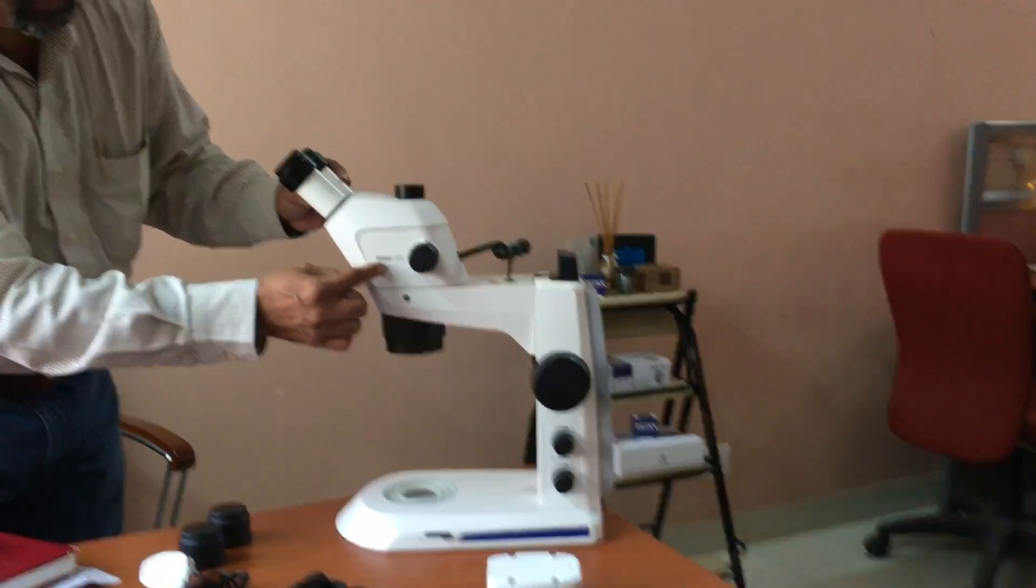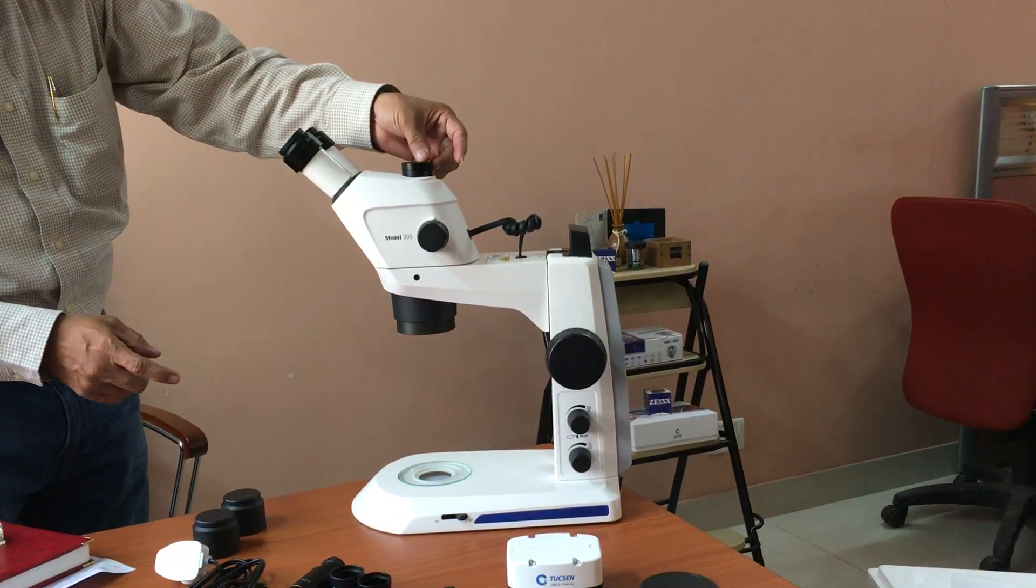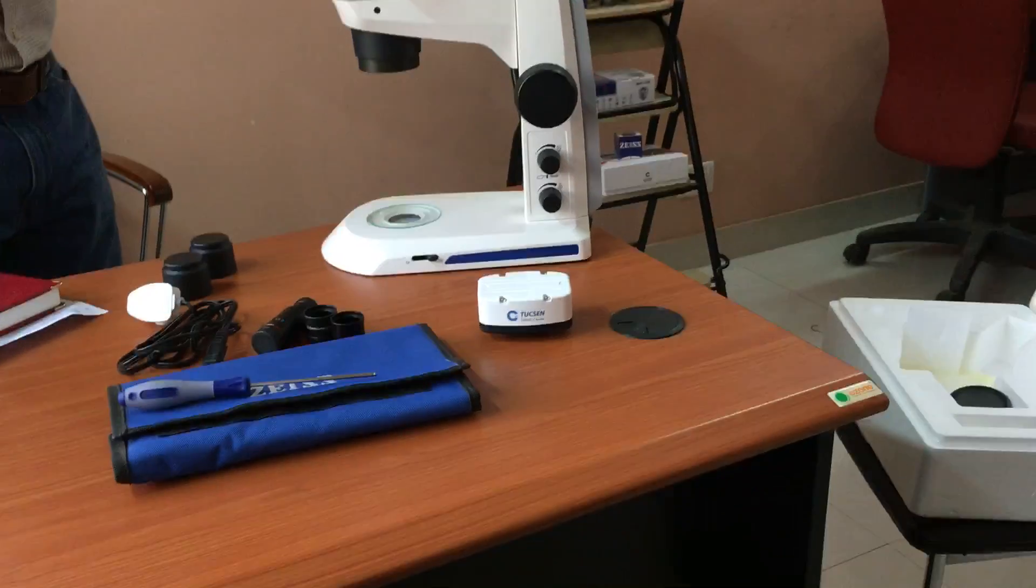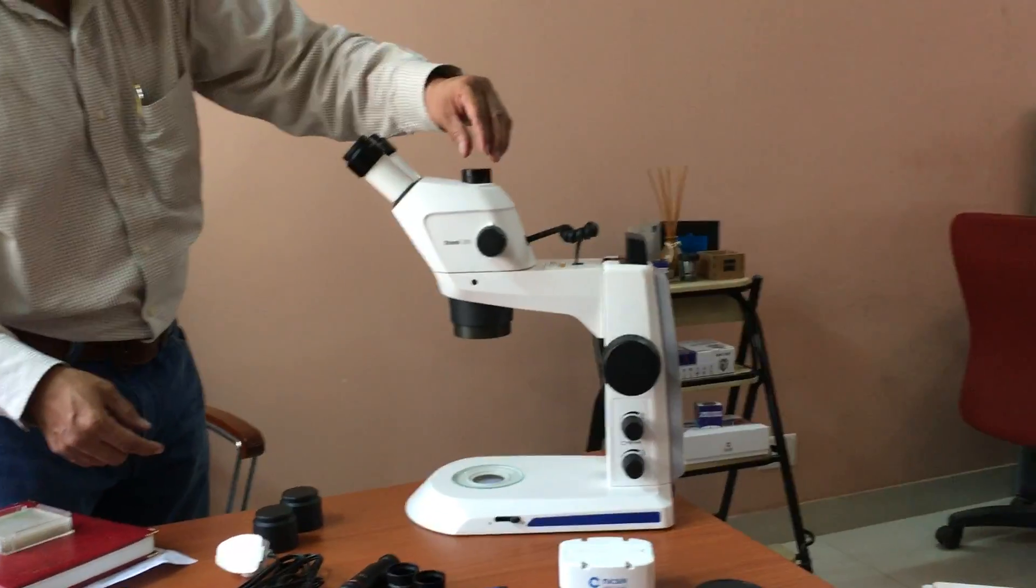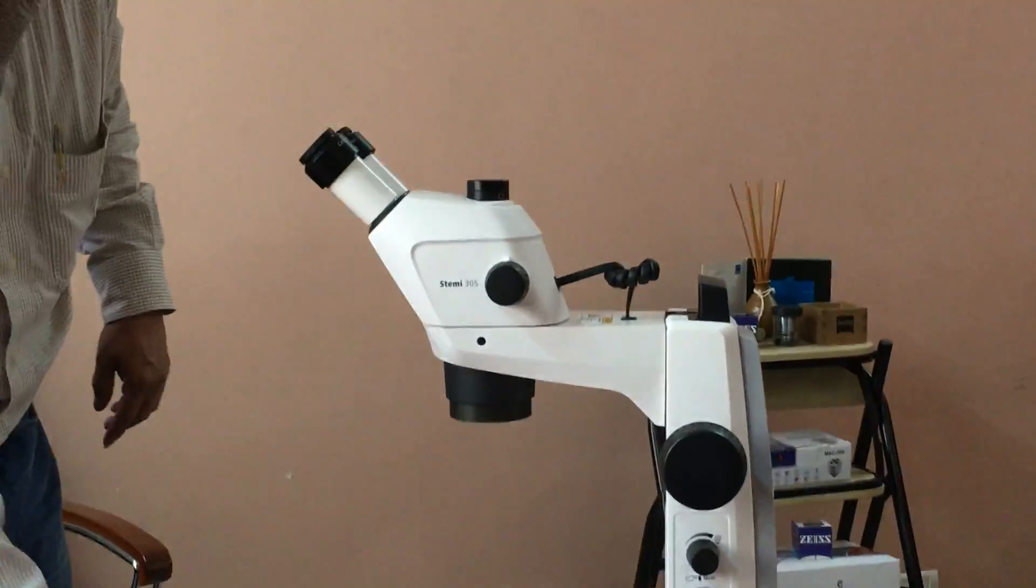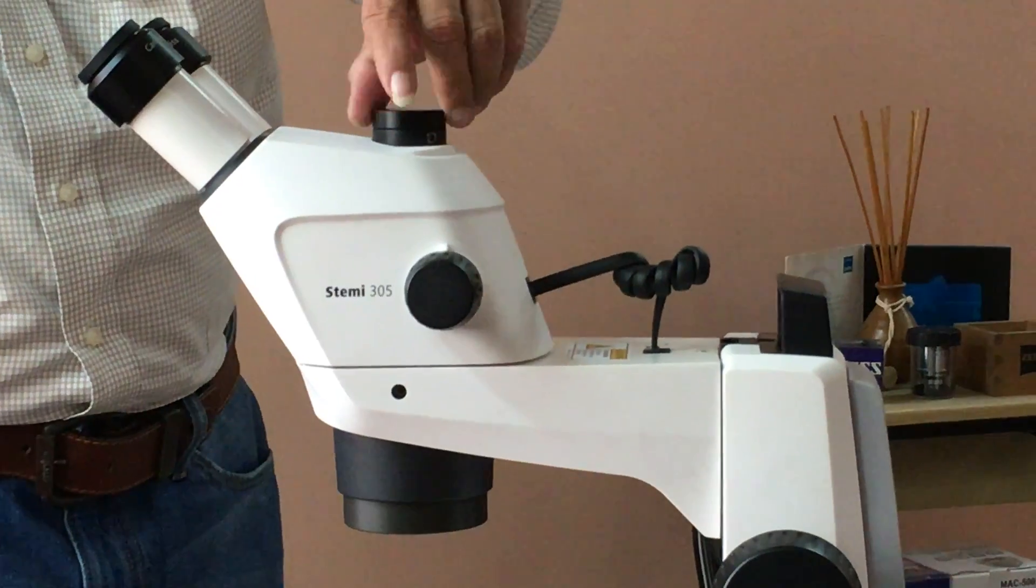For mounting the camera onto the trinacular or on the eyepiece we will show you the stabilizer procedure. We first mount it onto the trinacular. For mounting it onto the trinacular, remove the dust cap.